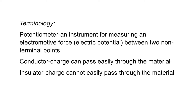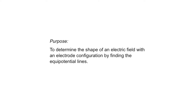A conductor is a material in which charge can easily pass through, and an insulator is a material in which charge cannot easily pass through. Now it's time to return to the lab. The objective was to determine the shape of an electric field with an electrode configuration by finding the equipotential lines.